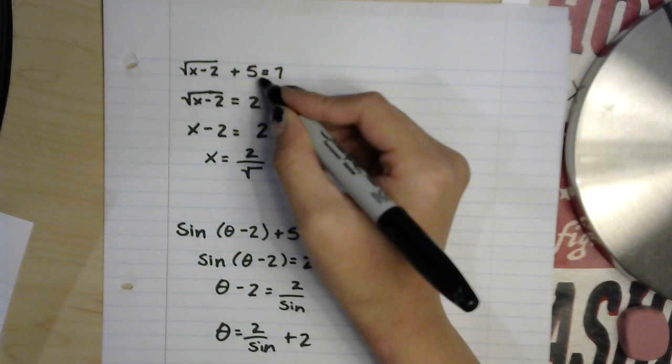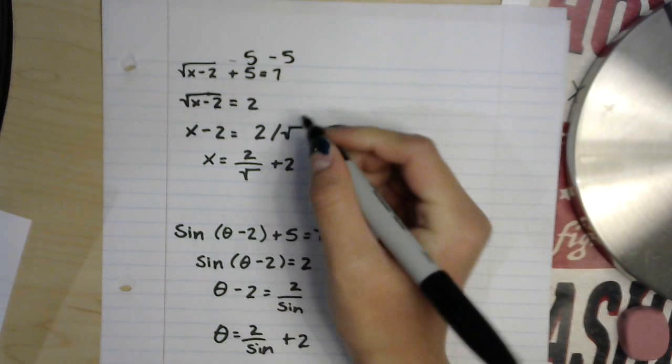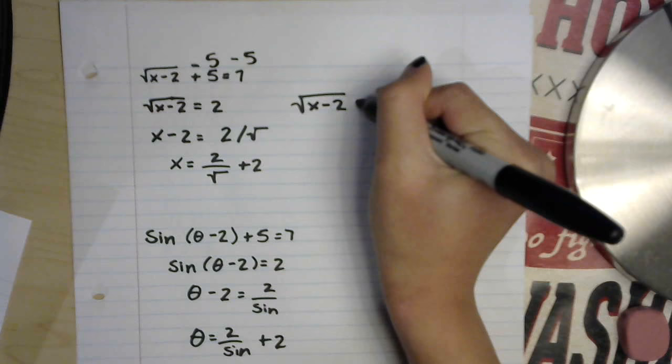This was solved correctly because the inverse operation of addition is subtraction. So subtract 5 from both sides which would equal 2. So this is correct.